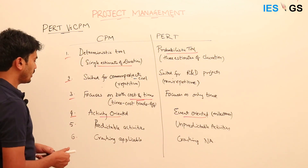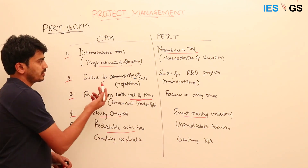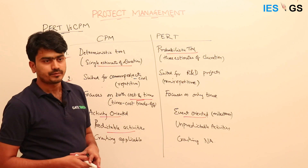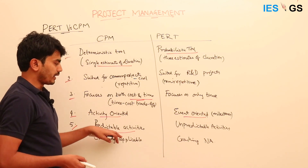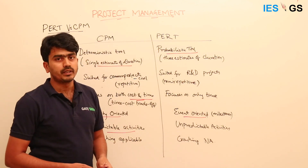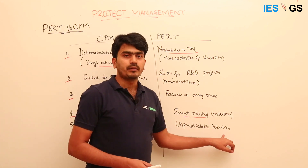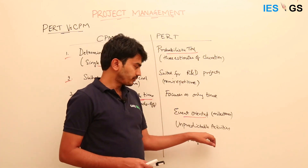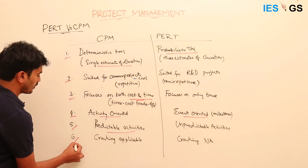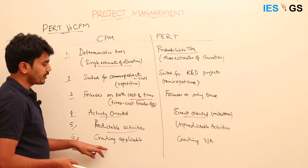The fifth difference: in CPM, activities are predictable because they are repetitive in nature and we know how those activities happen. In PERT-based R&D projects, activities are unpredictable in nature because we are not sure how much time they will take.